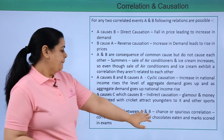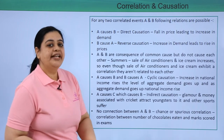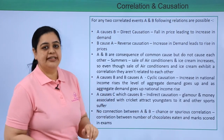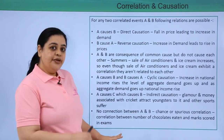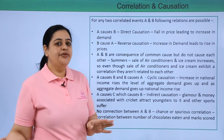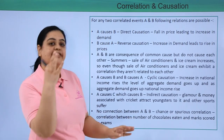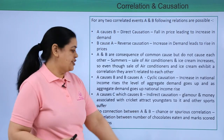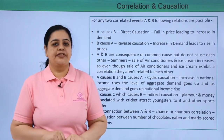The next case is no connection between A and B, which is known as chance or spurious correlation. For example, the correlation between the number of chocolates you eat during exams and the marks scored in exams — they have no real correlation. That is an example of spurious correlation.